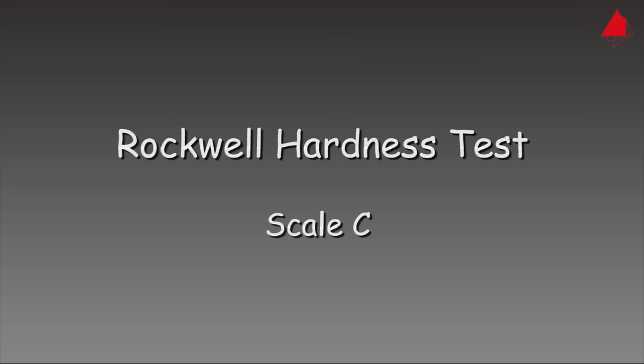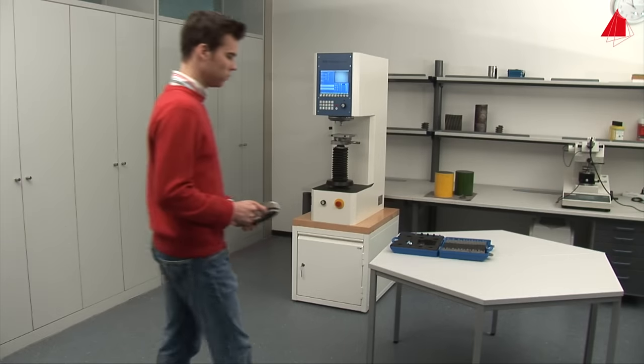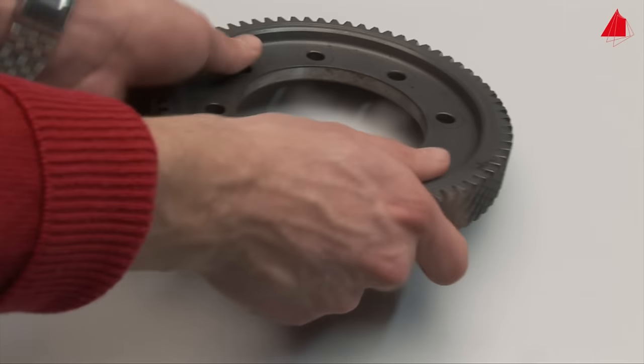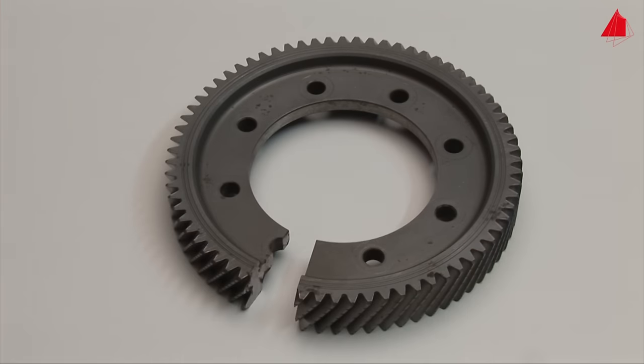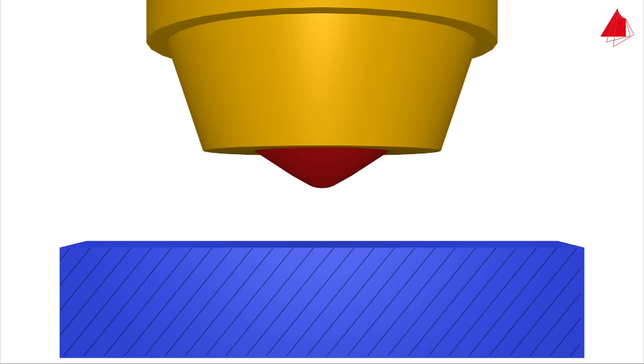The Rockwell hardness test scale C. In this video we will show how the Rockwell hardness test works using a gear wheel. The basic idea of this test method is to measure the permanent depth of indentation of a hard indenter under a test force.